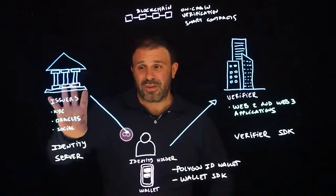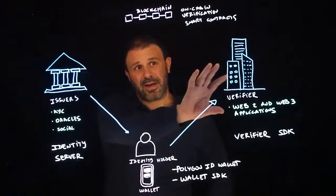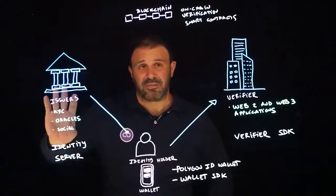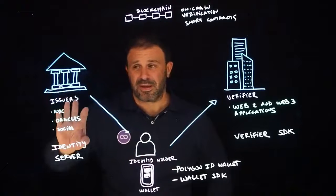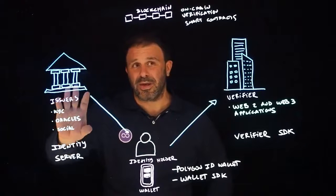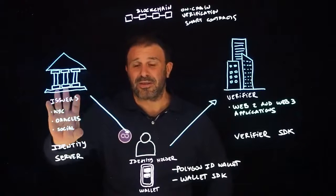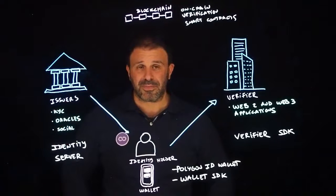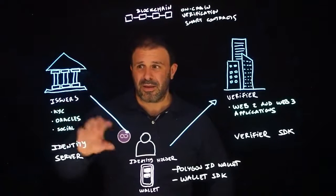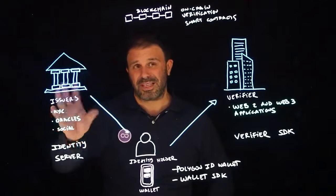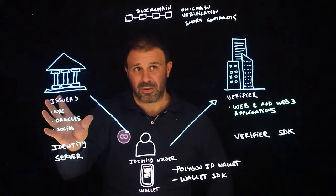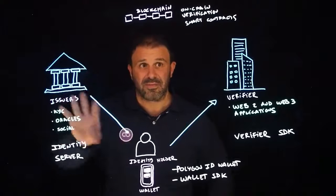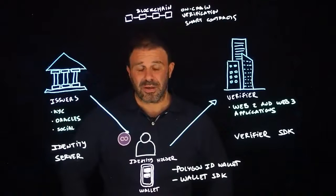Each one of these roles needs a different set of functionalities, starting with the issuers. They need to create the credentials that are going to be shared with the identity holders. They need to follow some standards to do so, to guarantee the interoperability of the triangle of trust.